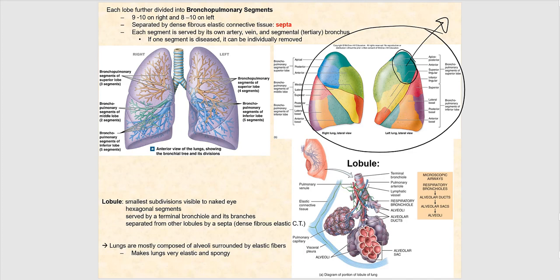Regarding the lobule — it's defined from the terminal bronchiole all the way down to each individual alveolus. Also, our lungs are surrounded by elastic fibers, which give our lungs their elasticity. This is critical and will be discussed when we get to lung compliance, covered in the physiology of the lung.